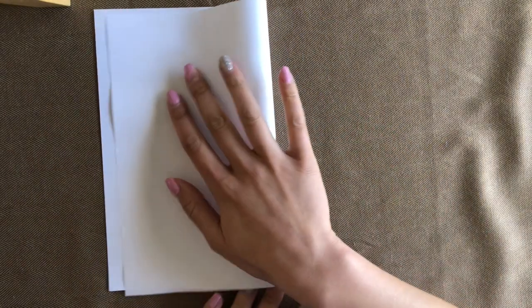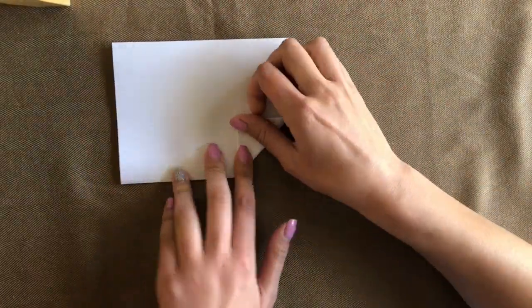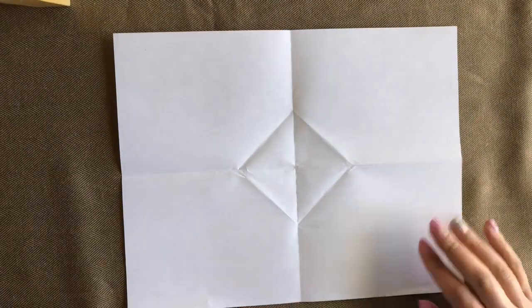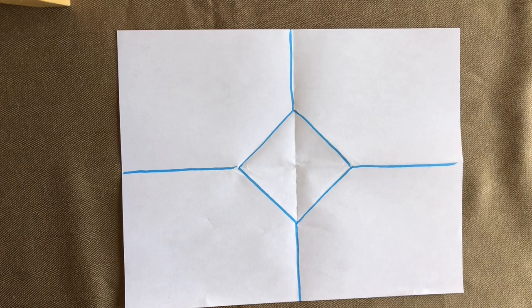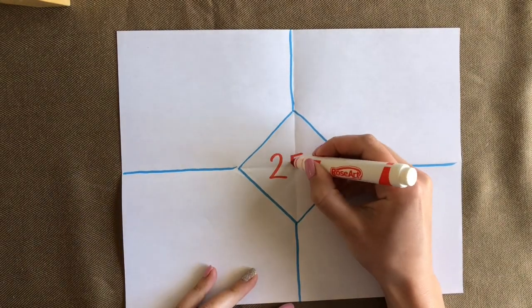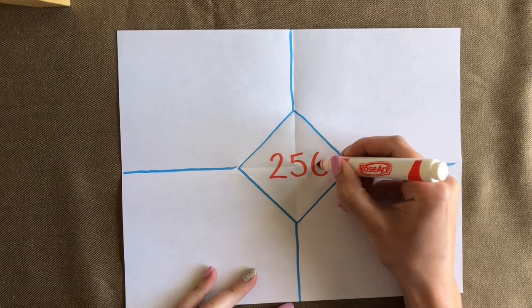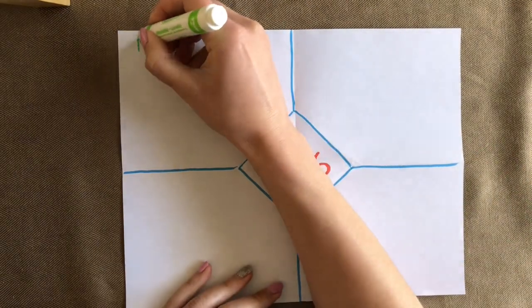Let's fold our paper so we can build and write the standard, expanded, and word form of a three-digit number. I'll get my paper prepped and ready again. The three-digit number I'm going to work with this time is 256.